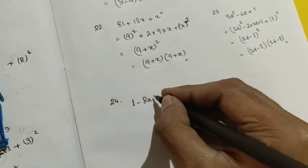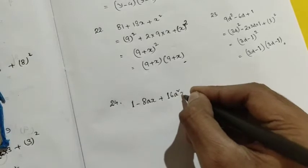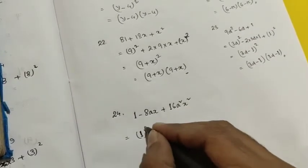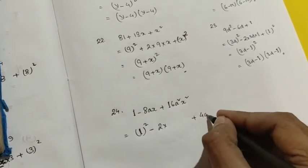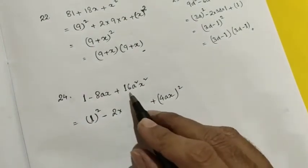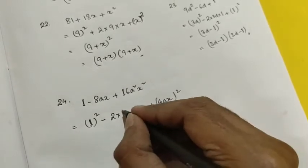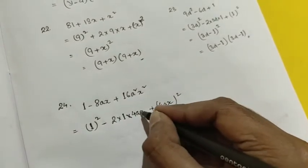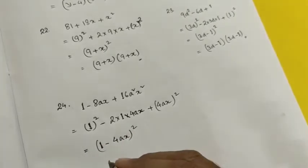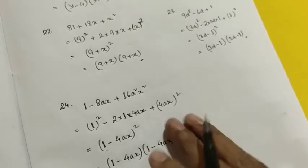Question number 24 is 1 - 8ax + 16a²x². Here 1 can be written as 1 whole square, and 16a²x² can be written as (4ax)², since 4² = 16, a² and x² follow. The middle term is minus 2 into 1 into 4ax. Using a² - 2ab + b² = (a-b)², this equals (1 - 4ax)², which in product form is (1 - 4ax)(1 - 4ax).